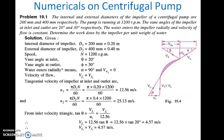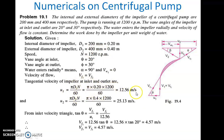We have to find impeller power per unit weight of water. Given data: inlet diameter D1 = 200 mm = 0.20 m, outlet diameter D2 = 400 mm = 0.40 m, RPM = 1200, theta = 20°, phi = 30°, alpha = 90° so Vw1 = 0, and Vf1 = Vf2. U1 can be found as pi D1 n by 60, giving U1 = 12.56 m/s. Similarly U2 = pi D2 n by 60, which is twice U1, giving U2 = 25.13 m/s.